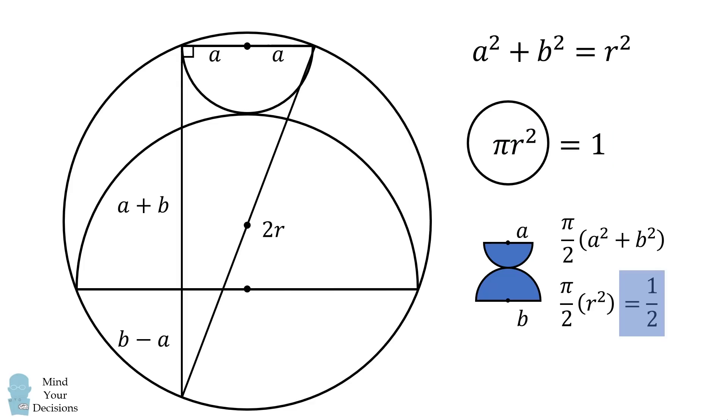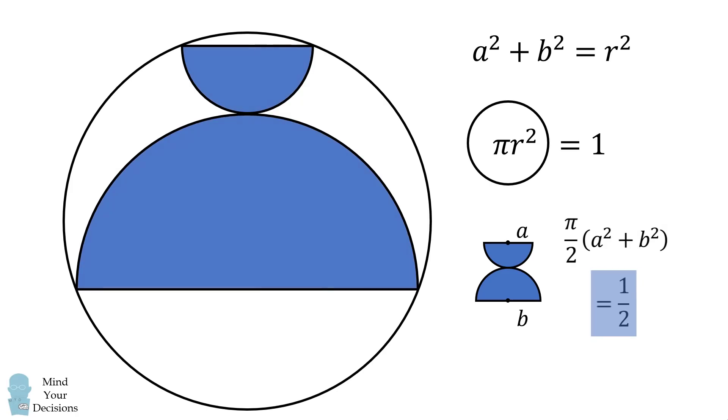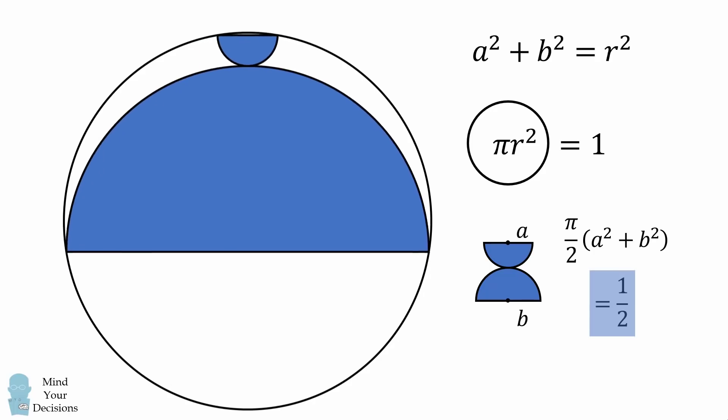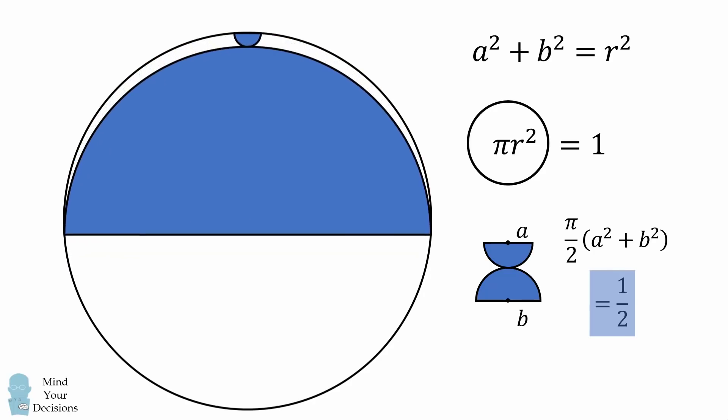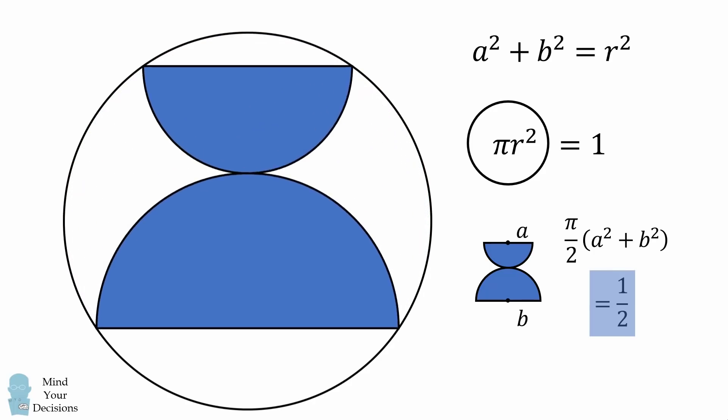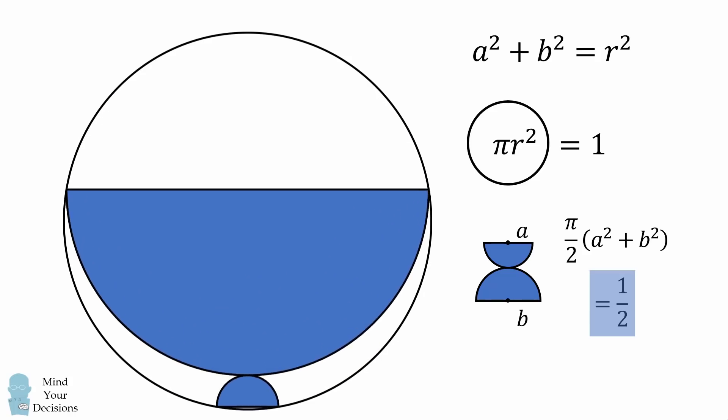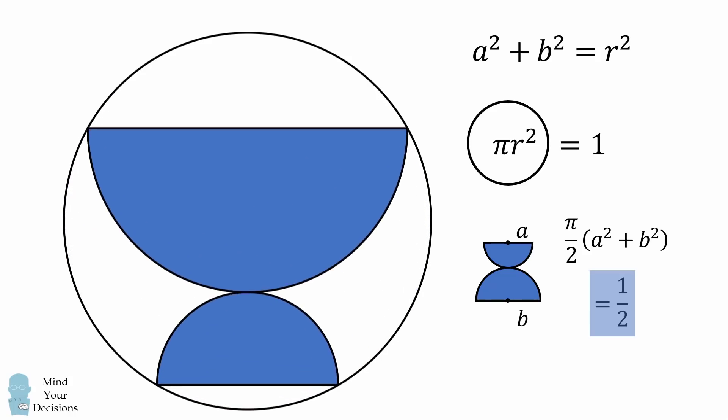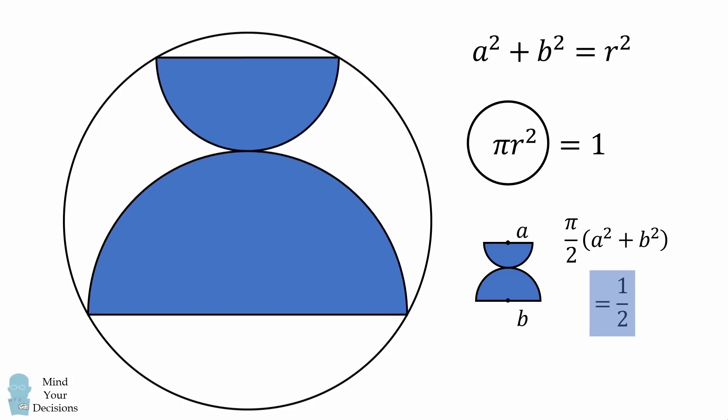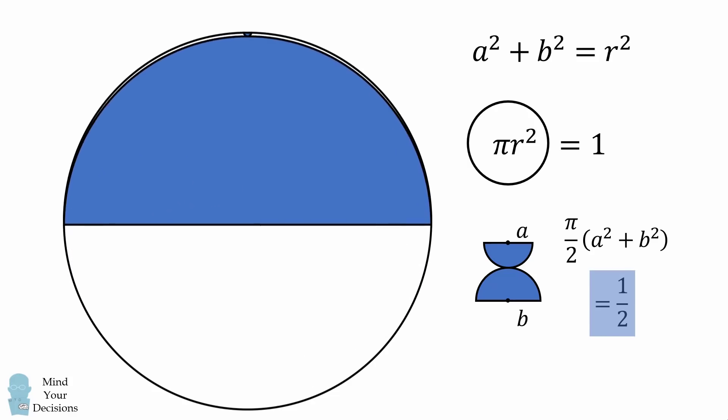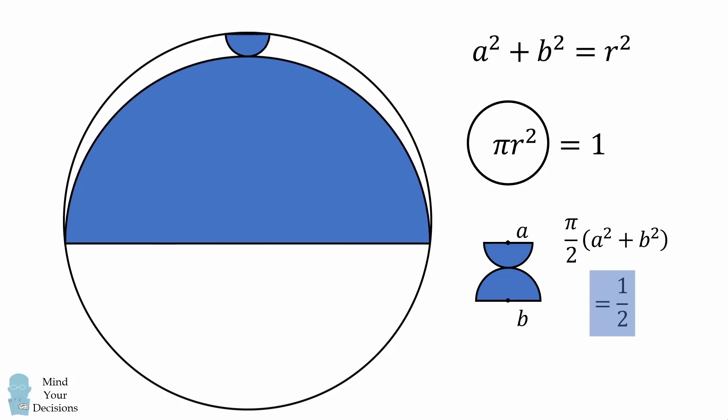And that's the answer. It's rather remarkable that the combined area of the two semicircles is always equal to half the area of the large circle. This is true regardless of how the two semicircles are in the diagram. I think it's a fascinating result that two semicircles fill exactly half of the large circle.